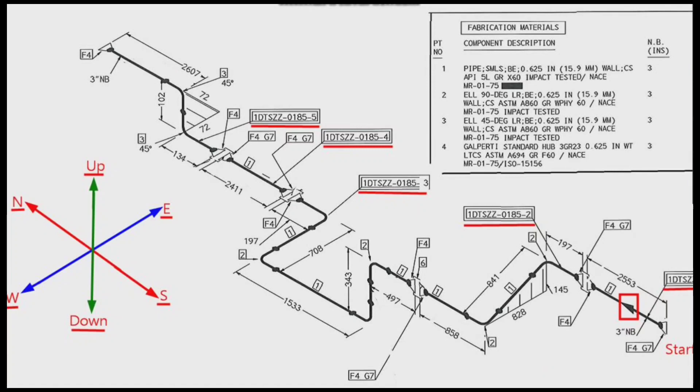The pipe travel starts from this point to the north direction, where the pipeline moves first down along the dashed lines 145 mm and then to the west along the dashed line 828 mm.